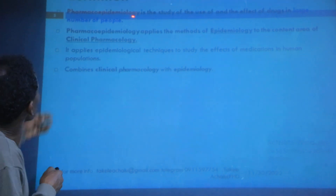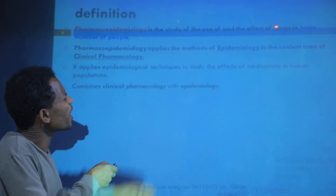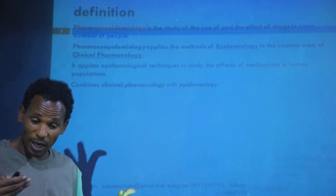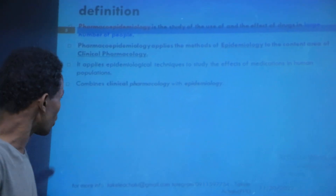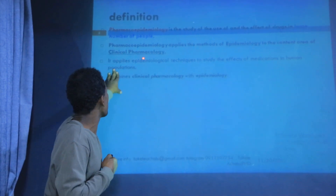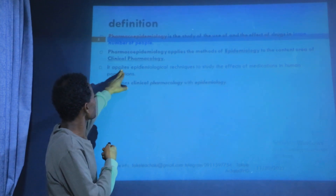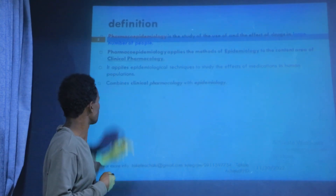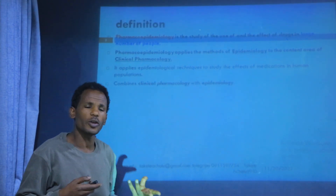To summarize, this is the definition: it is the study of the use and effect of drugs in large numbers of people. In other words, pharmacoepidemiology is the art or method of epidemiology, and the issue area is clinical pharmacology. It applies the methods of epidemiology to the content area of clinical pharmacology. In other words, it applies to the study of the effect of medication in human populations. Shortly, this combines clinical pharmacology with epidemiology.